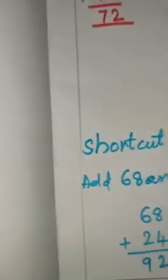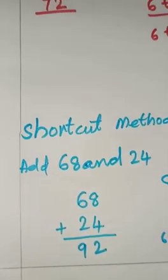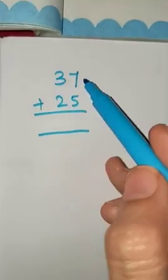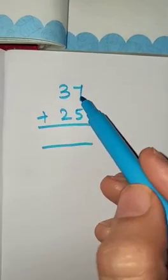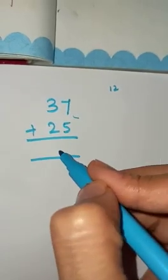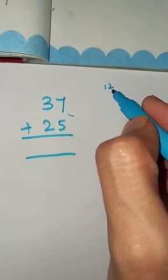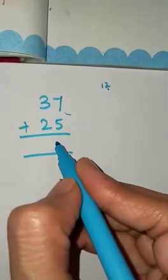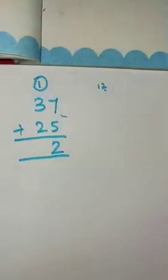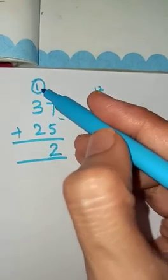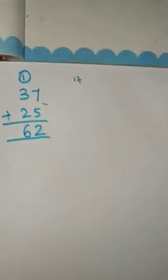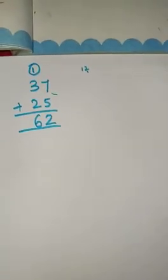Now see here, one more example. 37 plus 25. First add the ones: 7 plus 5 is 12. 1 plus 3 is 4, and 4 plus 2 is 6. So our final answer is 62.